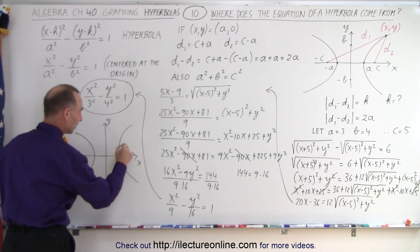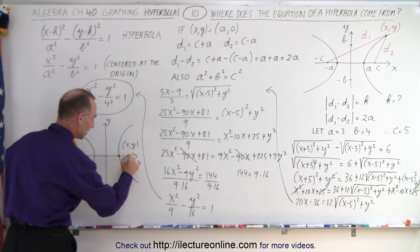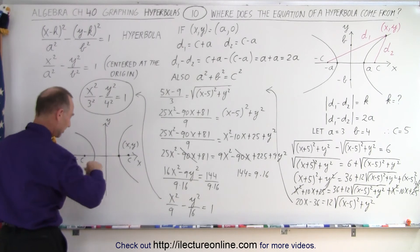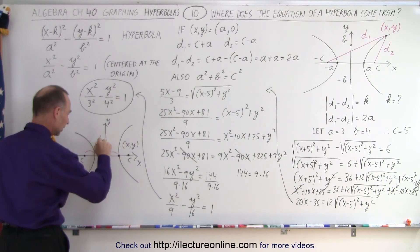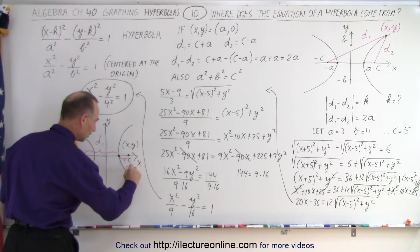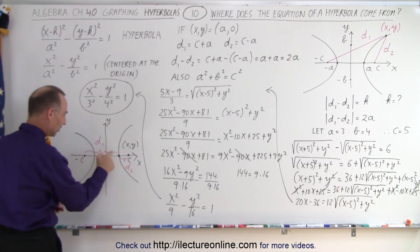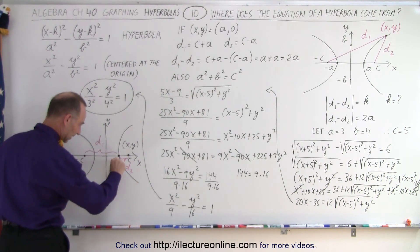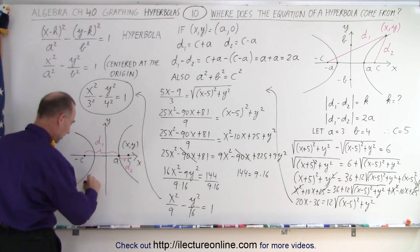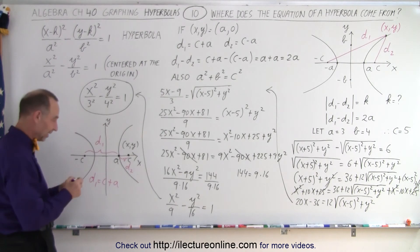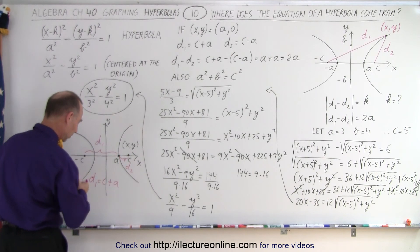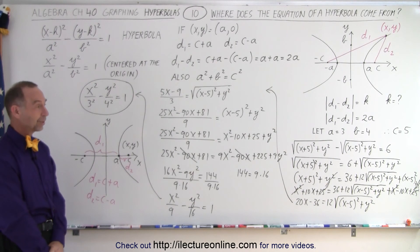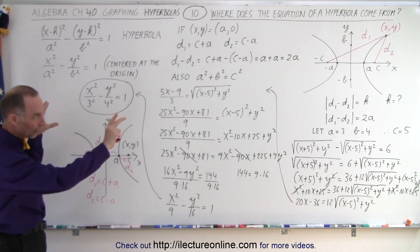So we put the point XY over here on the right branch. Here's the point C, and this is minus C. The distance from minus C to XY is D1, and the distance from C to XY is D2. D1 equals C plus A because the point A is on the x-axis here. So D1 is C plus A, and D2 is C minus A — the full distance C minus the shorter segment A. Subtract one from the other and you get 2A, which is always the constant when the hyperbola opens sideways.